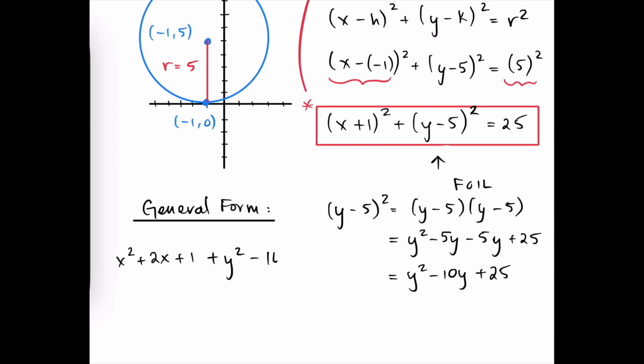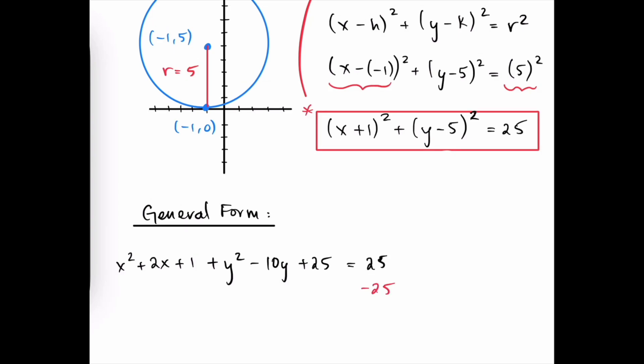And that gets added into this left-hand side. And we still have 25 over on the right. Let's set this equal to 0 by subtracting 25 from both sides. And also write our equation in descending order, which means that we begin with the x squared, y squared terms.